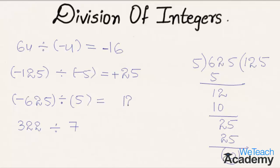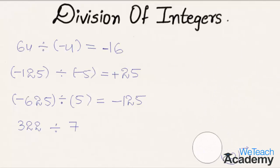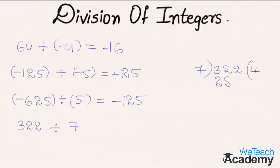So 25 minus 25 is 0, and we get the result as 125. The signs are opposite, so we get the result as minus 125. Coming to the next example: 322 divided by 7. Here 7 four times is 28, and we get 32 minus 28 as 4, bringing down the next digit 2 we get 42.